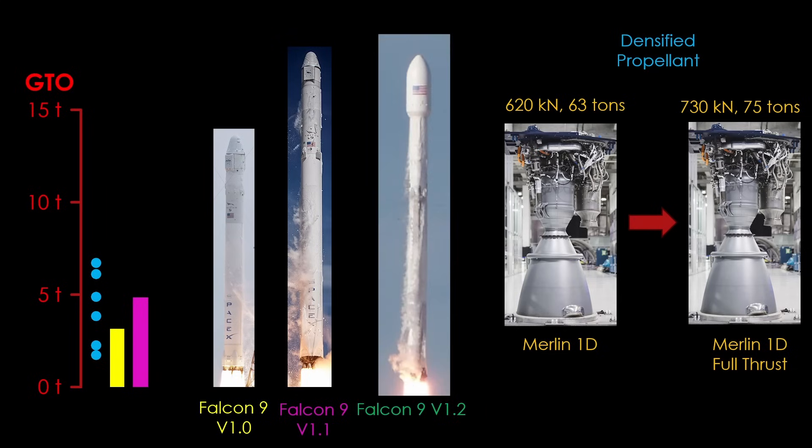This rocket is sometimes known as Falcon 9 V 1.2, but it's also commonly known as full thrust. It can carry 3.9 tons to geosynchronous transfer orbit with full stage reuse, and a full 6.8 tons in expendable mode. That covers almost all the market.